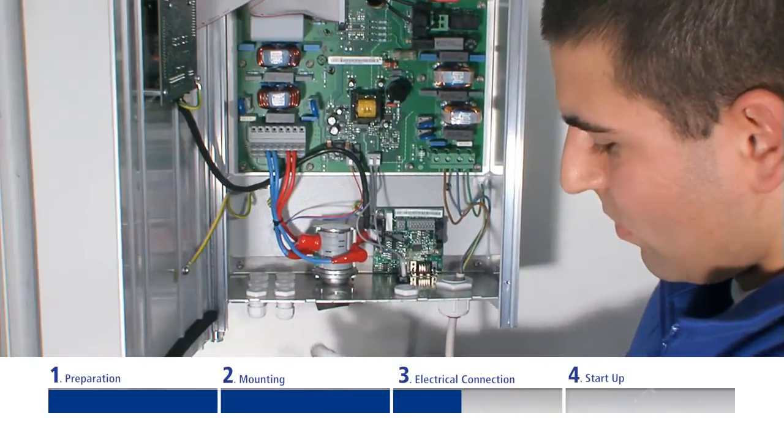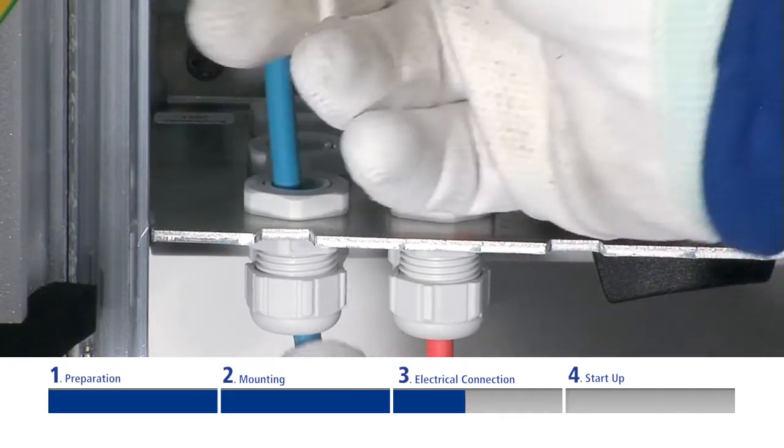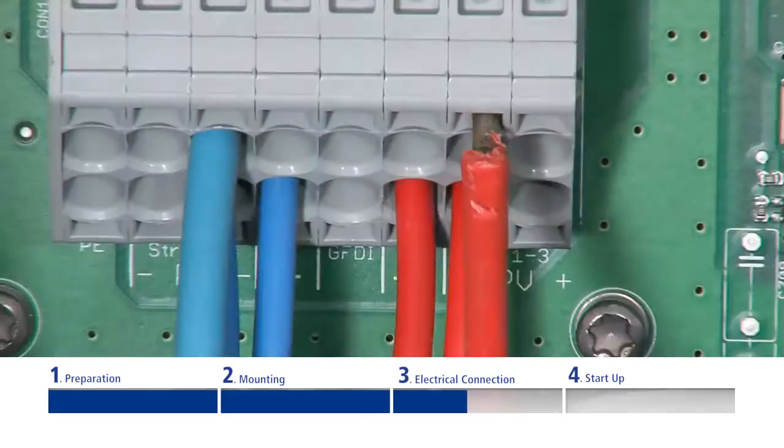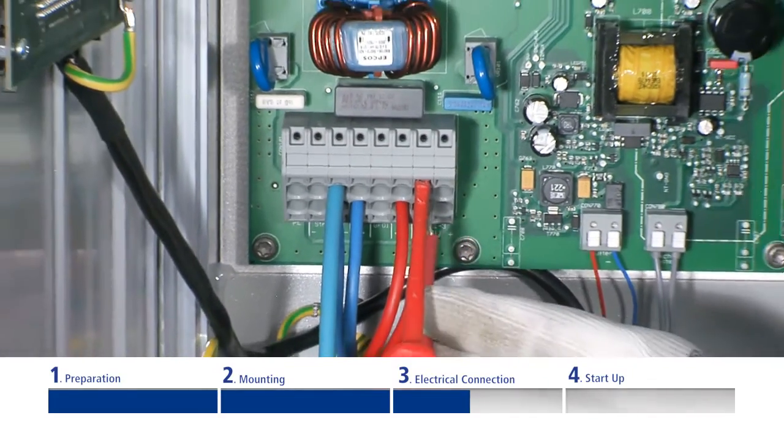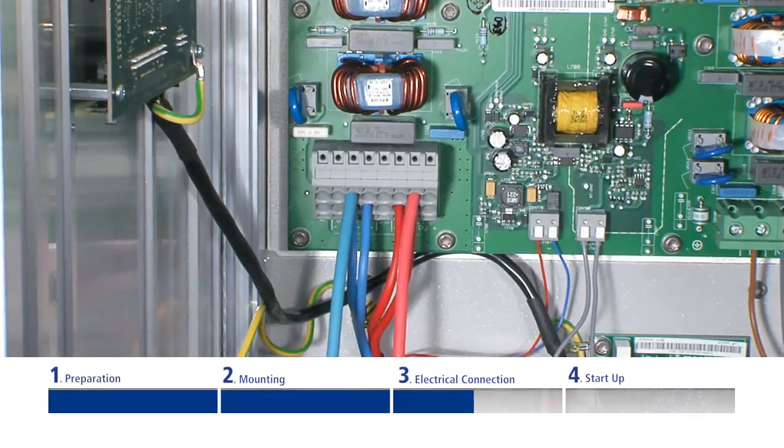Secure the cable ends into the connection terminals. Pay attention to the PV plus and PV minus signs. Connecting to the wrong pole will damage the inverter. Tighten the cap of the cable fitting.